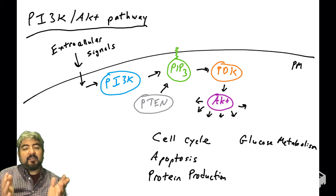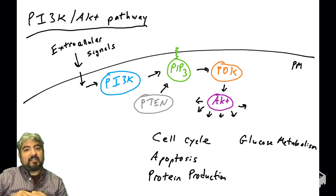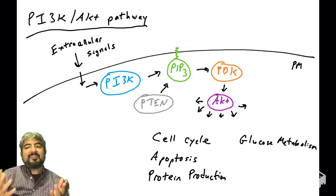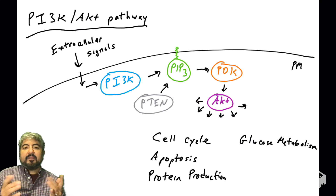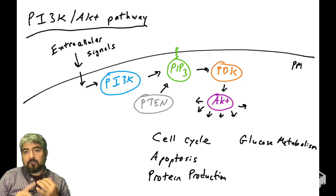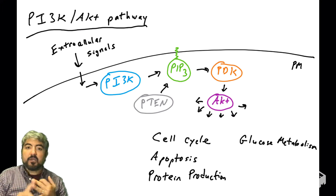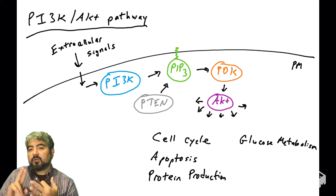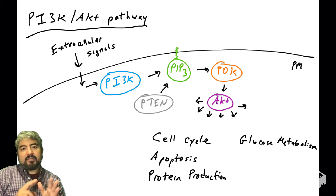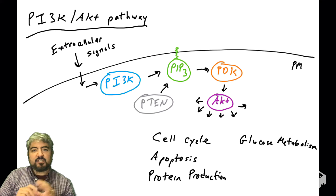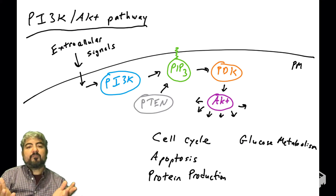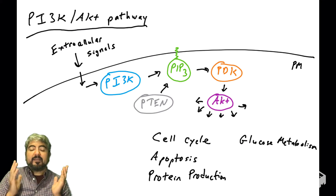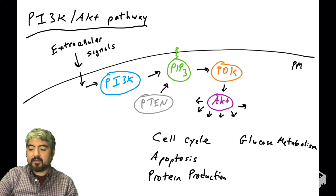AKT is a very important protein in intracellular signaling. It can signal into many different pathways within the cell that control the cell cycle, apoptosis, protein production, metabolism, differentiation — all sorts of things. So AKT can feed into a lot of different pathways, and it's important to understand how AKT is regulated.